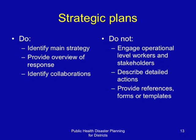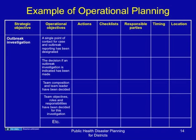This is an example of a matrix for operational planning. As you can see, it shows the strategic objective, the operational objectives within that strategy, the actions, the checklist if necessary, the responsible parties, the timing with respect to the disaster, and the location with respect to the disaster.